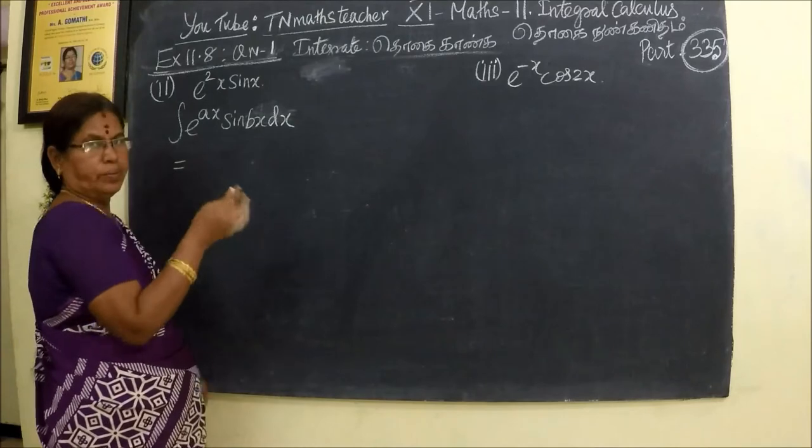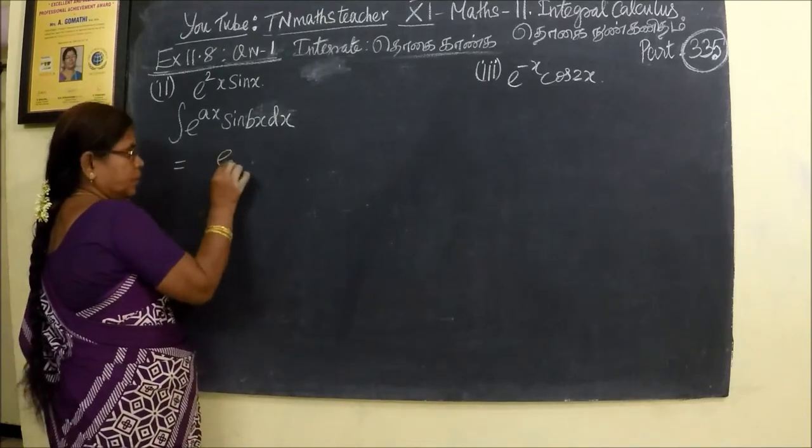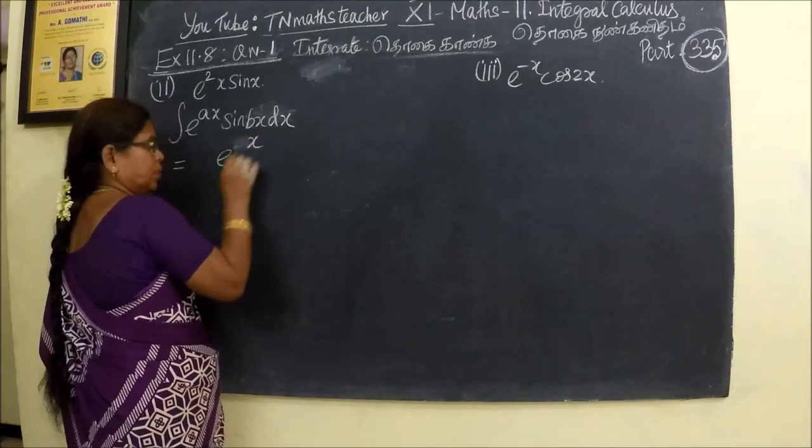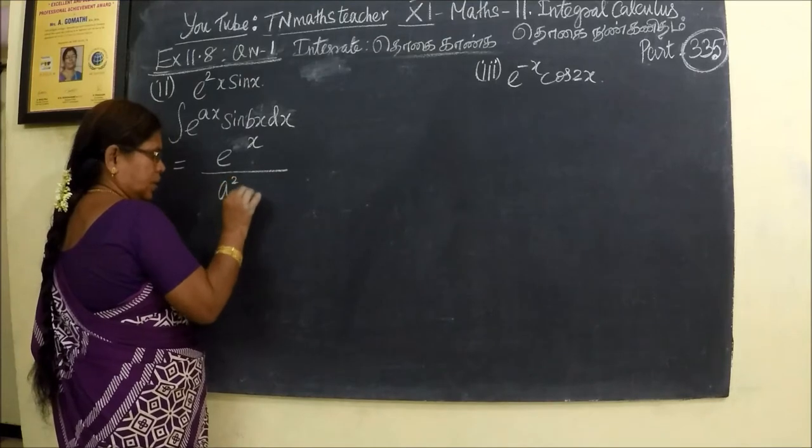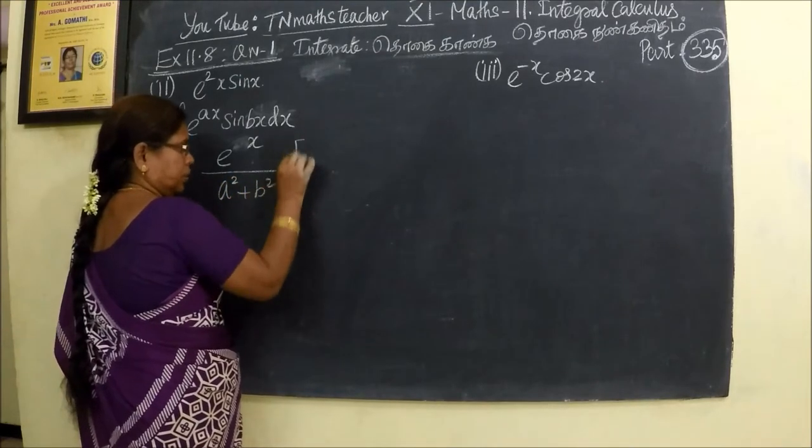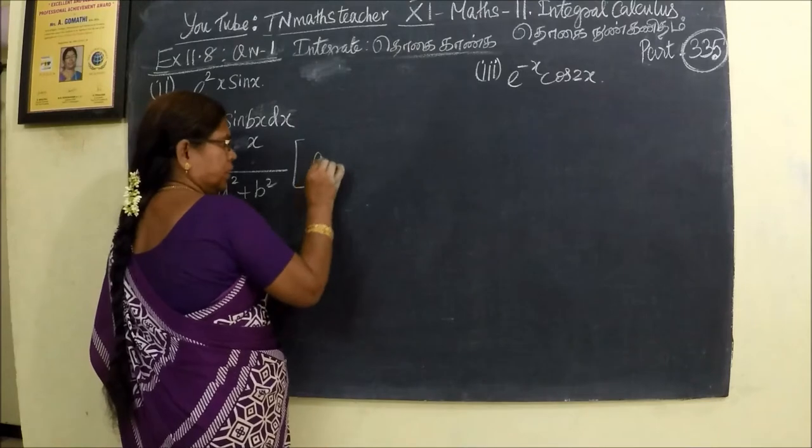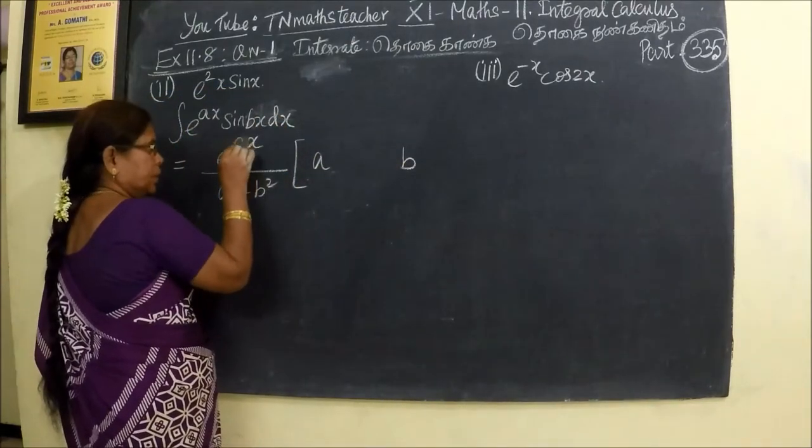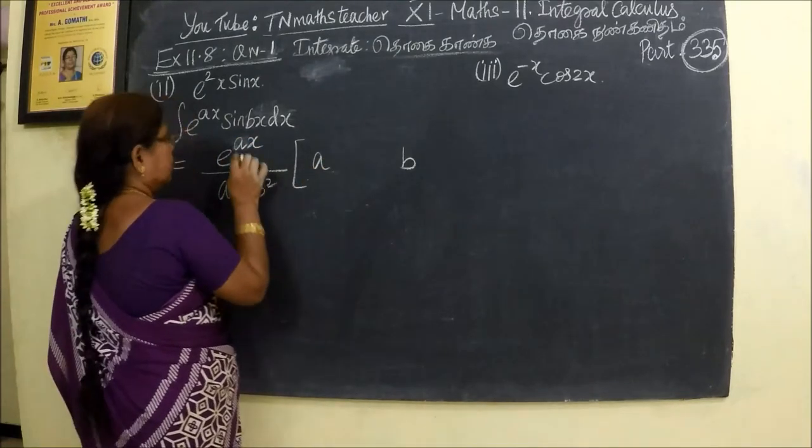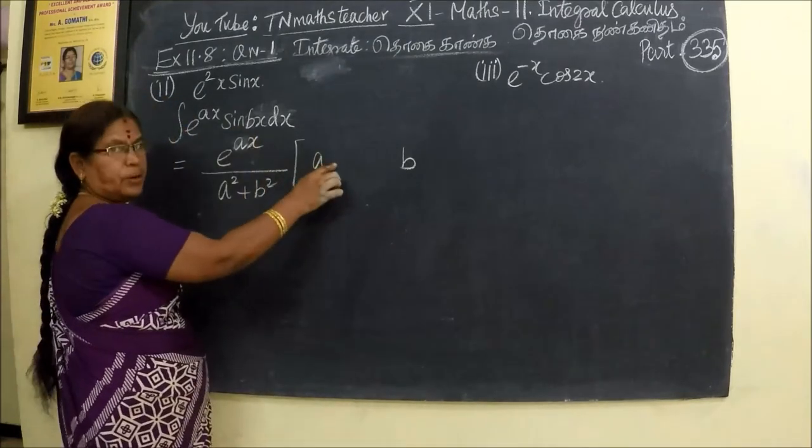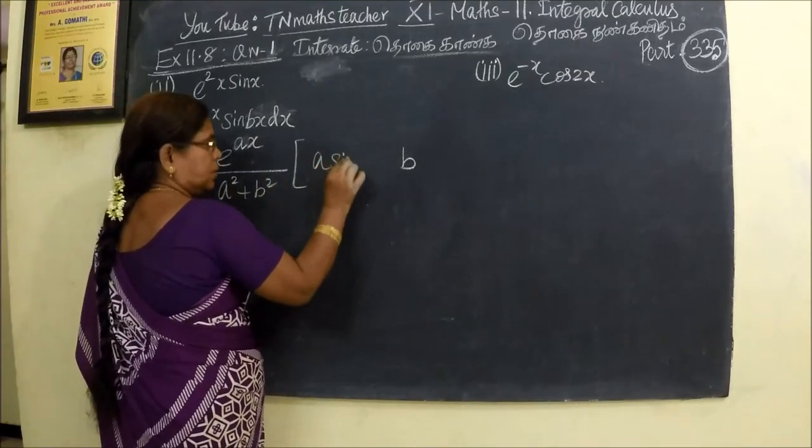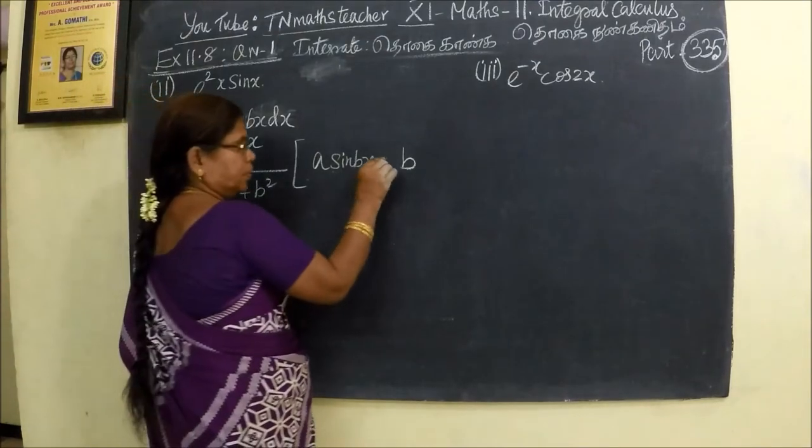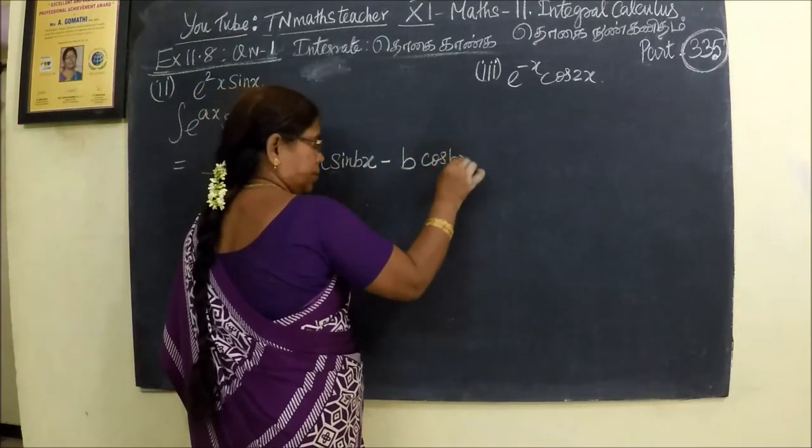Do you remember that the last video will be seen, e power a square plus b square. Here is a and here is b. Here is a. Then the same will come here. Here is bx, here is bx, here is bx. Then bx will come.